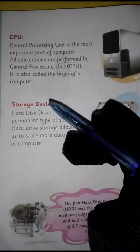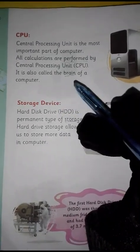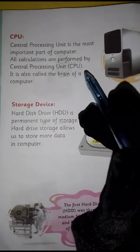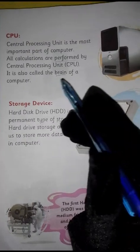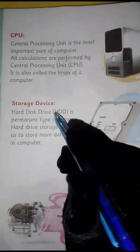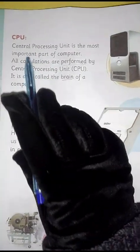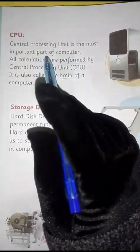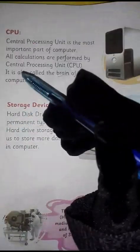Computer کے اندر جتنے بھی کام ہو رہے ہوتے ہیں وہ سب CPU یعنی Central Processing Unit کی بدولت ہی ہوتے ہیں۔ Computer کا تمام control CPU کی وجہ سے ہے۔ CPU کے اور بھی نام ہیں: اسے main processor بھی کہتے ہیں، central processor بھی کہتے ہیں، اور central processing unit بھی کہا جاتا ہے۔